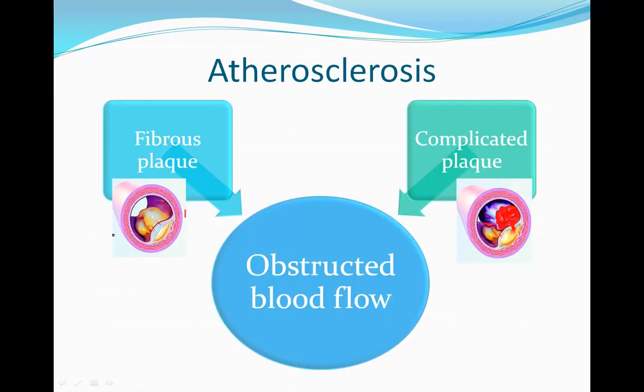Fibrous plaque and complicated plaque both narrow blood vessels and obstruct blood flow. This is the main reason why atherosclerosis is traumatic to the body. When blood flow is obstructed, important organs are not able to receive nutrients. It results in ischemia and can cause infarction. The organs most susceptible to ischemia and infarction are the heart and the brain.